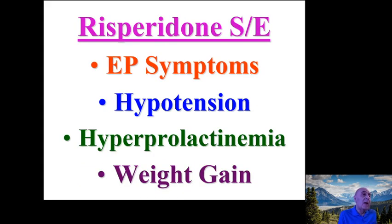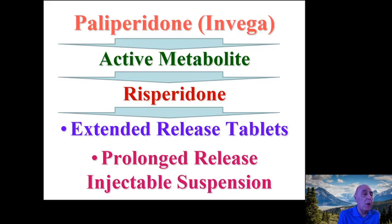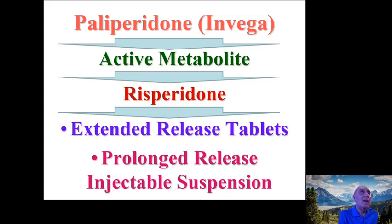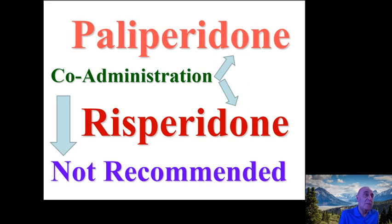Side effects of risperidone include extrapyramidal symptoms, hypertension, hyperprolactinemia, and weight gain. Invega (paliperidone) is metabolized in the body to risperidone as an active metabolite and is available as extended-release tablets and as an injection. It is not recommended to use Invega and risperidone concurrently since Invega converts to risperidone. Invega is used to treat schizophrenia and related psychotic disorders.